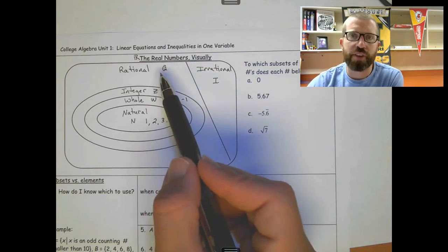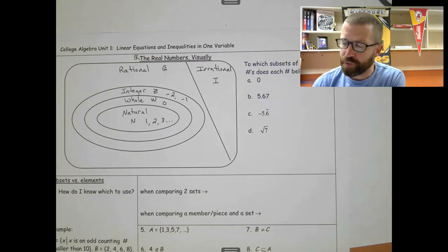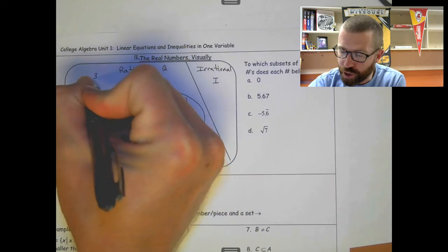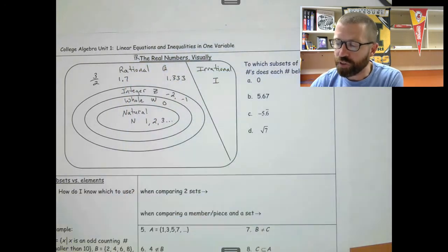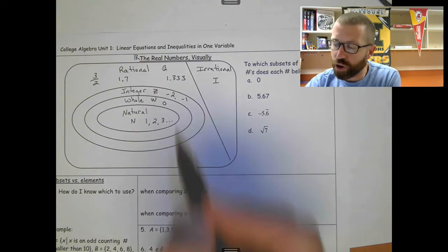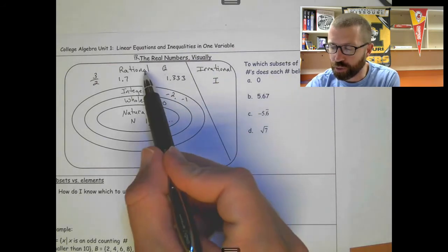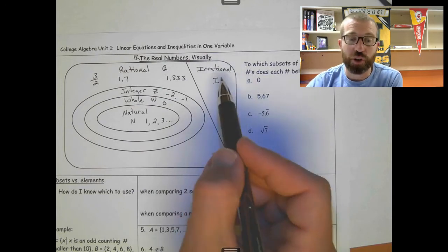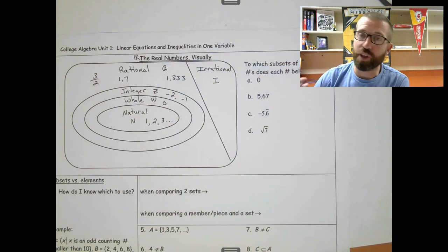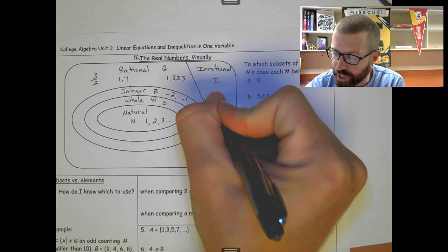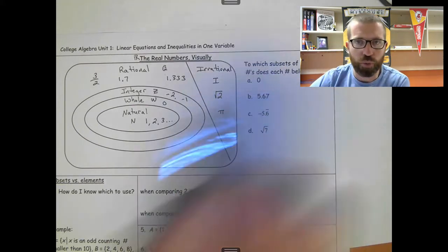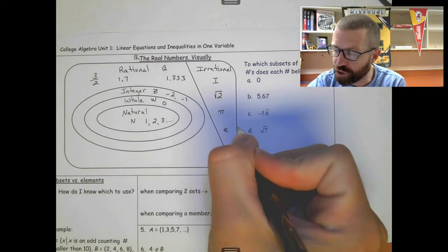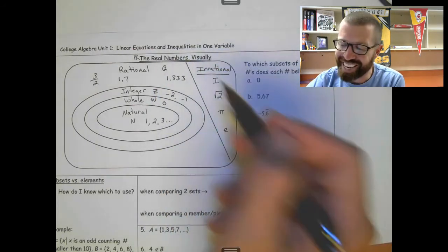In the rational numbers Q, they contain everything that can be written as a fraction. This includes decimals that are repeating. This includes decimals that stop. So like 3 halves, 1.7, 1.333 repeating. All of these are rational numbers. The irrational numbers are their own set. So they do not include the rational numbers, the integer, the whole, or the natural. These are numbers that their decimals go on forever but they do not repeat. So something like the square root of 2, if you put that in your calculator, you'll get a decimal that just goes on forever. So a very popular one is pi, as that 3.14 just keeps going and going and going. E is another irrational number. So these are irrational numbers that cannot be written as a fraction.